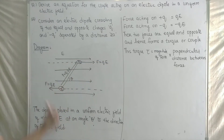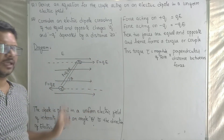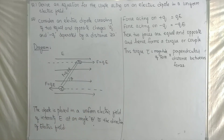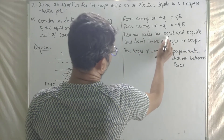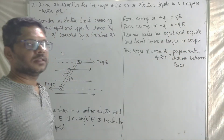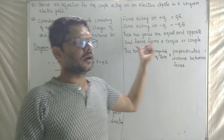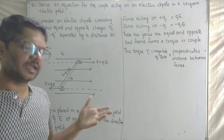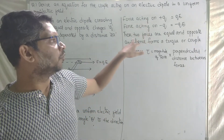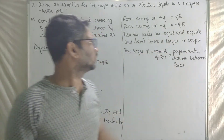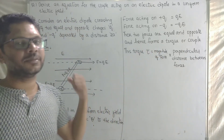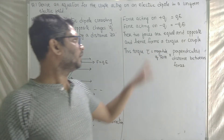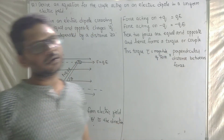Plus QE and minus QE are equal in magnitude and opposite in direction. They are not acting along the same line — their lines of action are different. Hence they form a torque or couple.